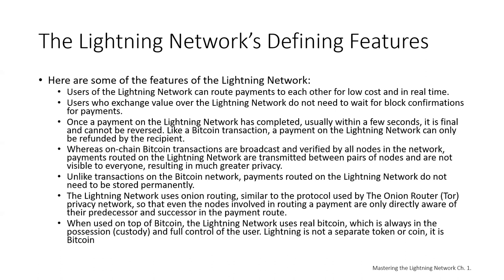The Lightning Network uses onion routing, similar to the protocol used by the Tor network, so that even nodes involved in routing a payment are only directly aware of their predecessor and successor nodes in the payment route — they won't necessarily know who the sender and receiver are. When used on top of Bitcoin, the Lightning Network uses real Bitcoins, which remain in the full possession and control of the user. Lightning is not a separate token or coin — it is actual Bitcoins.